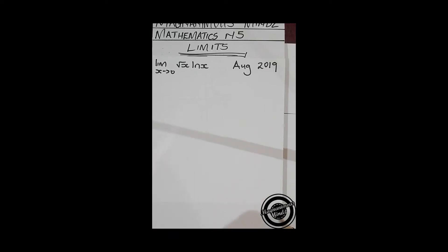Greetings guys, this is Magnanimous Minds Lectures Online. We continue with Mathematics P5 Limits. We'll be doing a typical exam question from the August 2019 exam paper. We are given lim x approaching zero, whereby our function is square root of x times ln x.